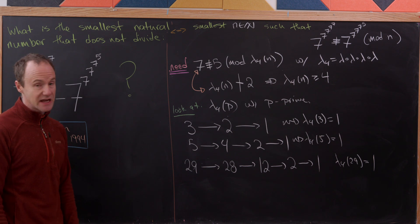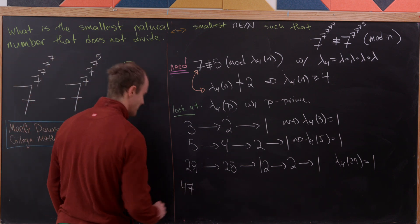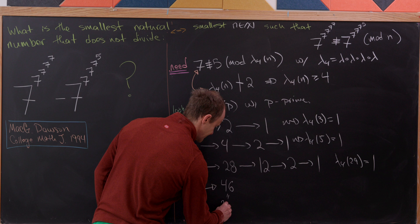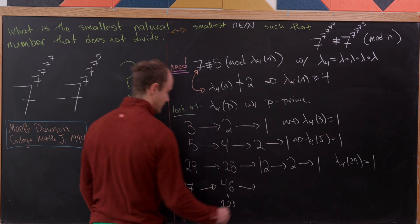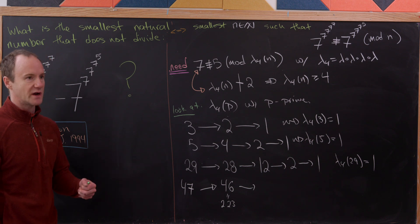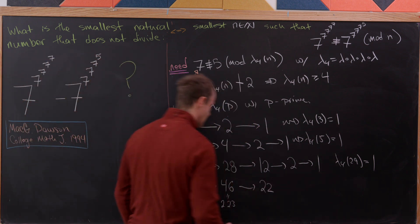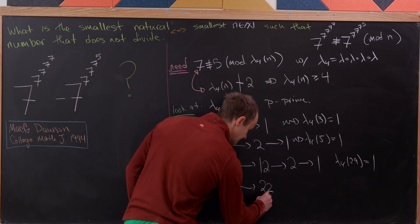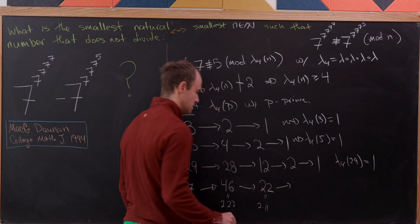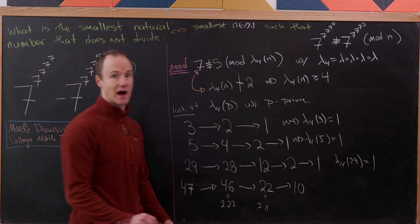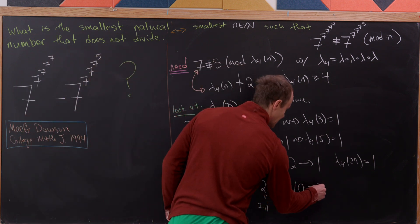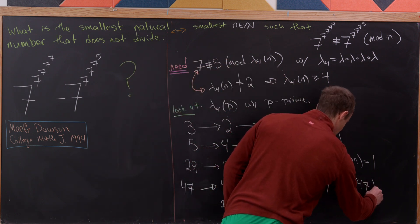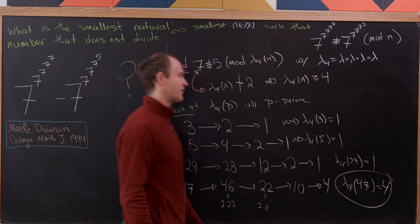Continuing this process, the number that jumps out is p = 47. Lambda of 47 = 46 = 2 × 23. Lambda of 2 is 1 and lambda of 23 is 22, so LCM(1, 22) = 22. Then 22 = 2 × 11, so lambda of 22 = 10. Finally, lambda of 10 = 4. So lambda sub 4 of 47 = 4, and that's the first prime where this happens.